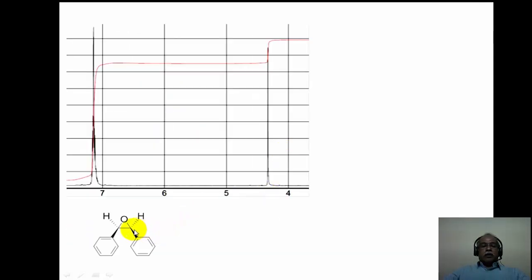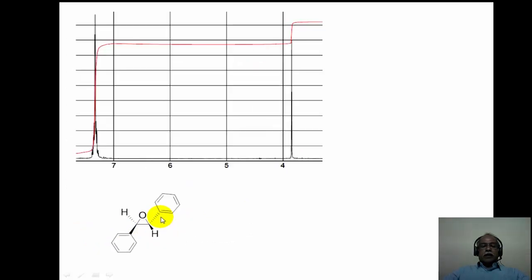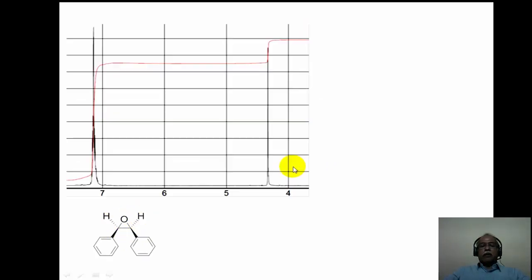For cis- and trans-stilbene oxide, one cannot determine stereochemistry based on J values due to the symmetrical nature of the molecule. In the trans isomer, the two hydrogens come at about 3.9 ppm, whereas in the cis isomer they come around 4.2 ppm in the NMR spectrum for the epoxide ring hydrogens.